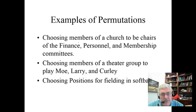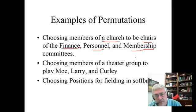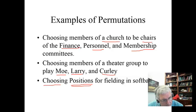Examples of permutation: choosing the members of a church to be chairs of the finance, the personnel, and the membership committee. This is a permutation because there's an order given to them the minute we start putting labels on them. Choosing members of a theater group to be Mo, Larry, and Curly. And choosing positions for fielding in softball, because you have different positions people can play in the field and you put labels on them when you do that.